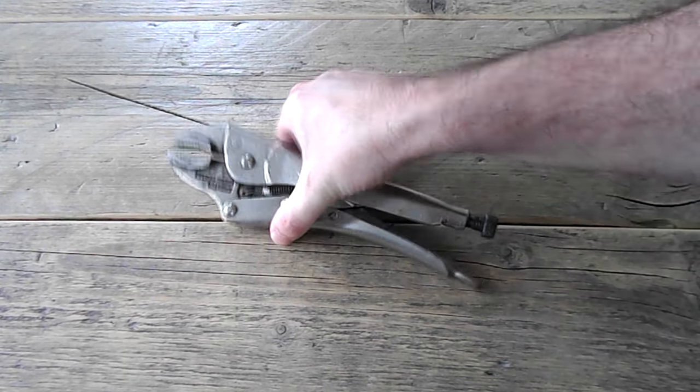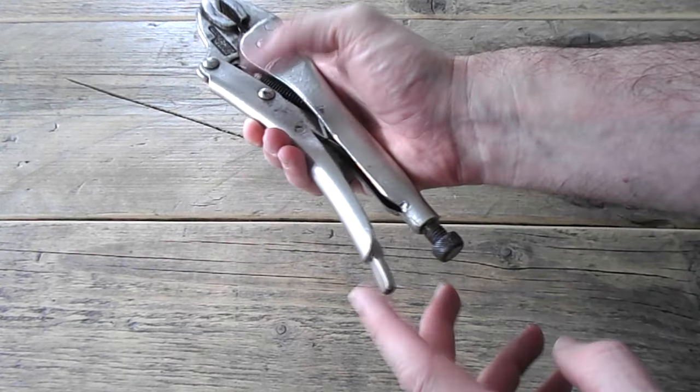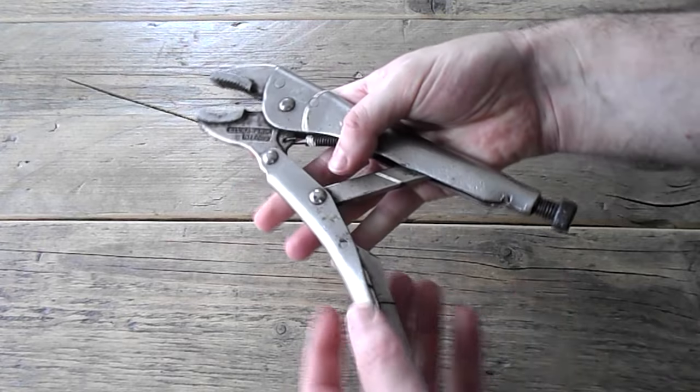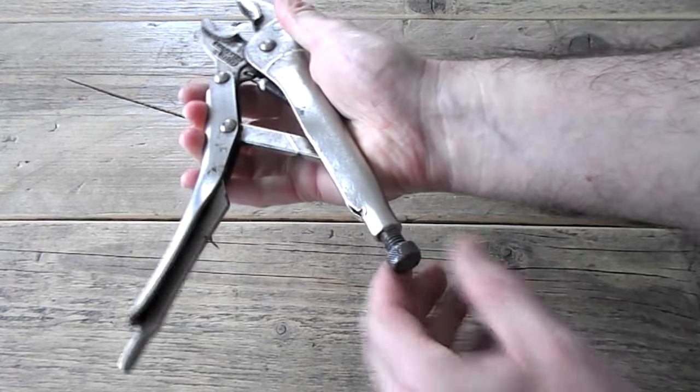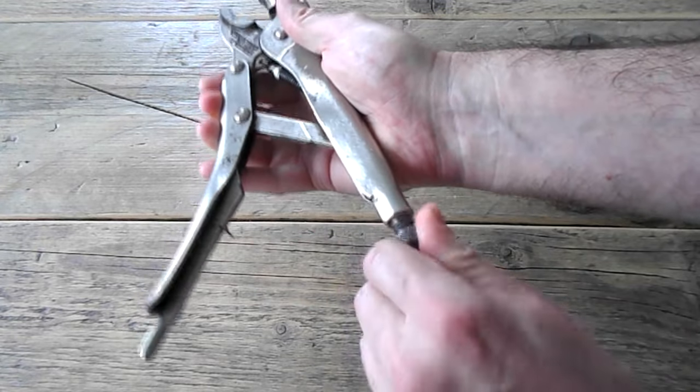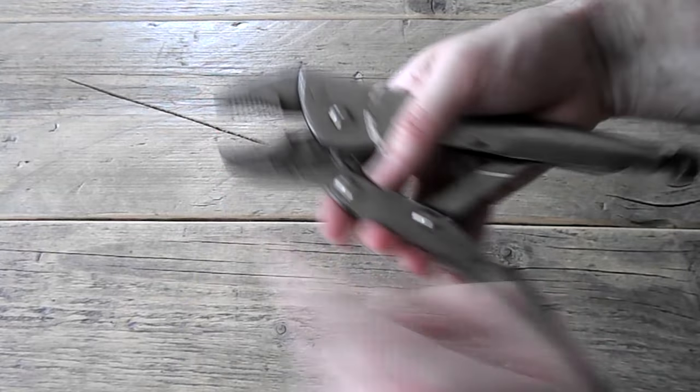How to use vise grips. First of all, use this lever here to open it up. And the screw at the end here, just twist to adjust the jaws at the front.